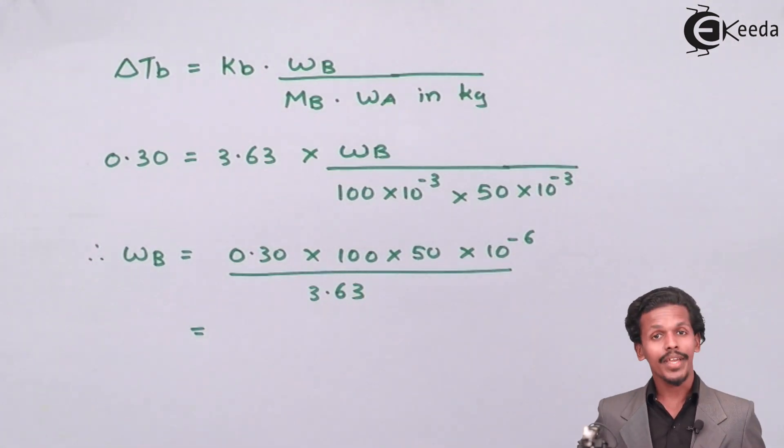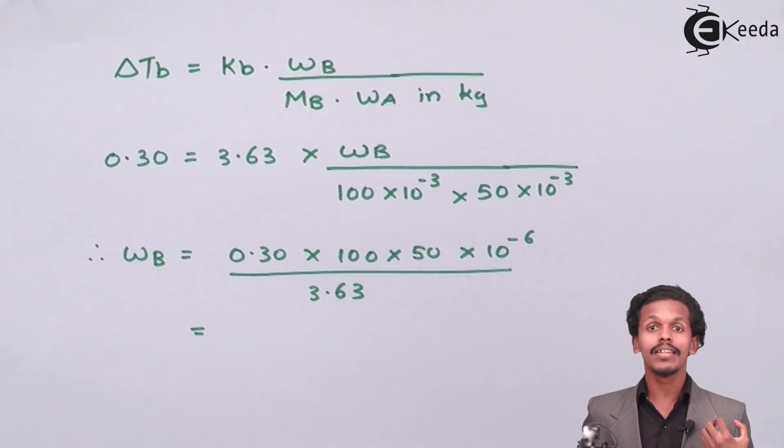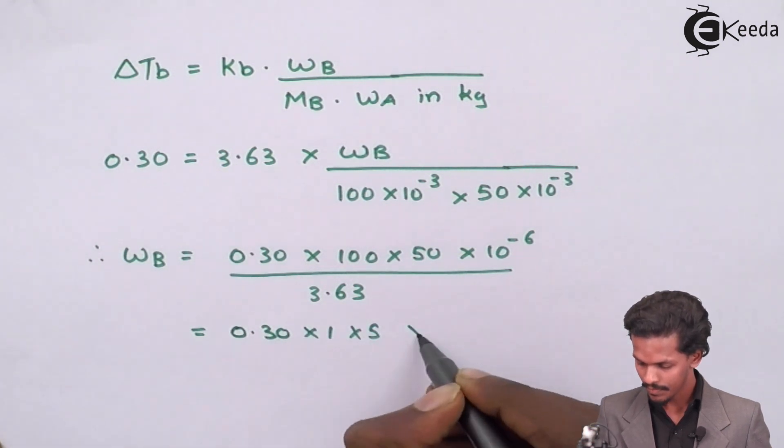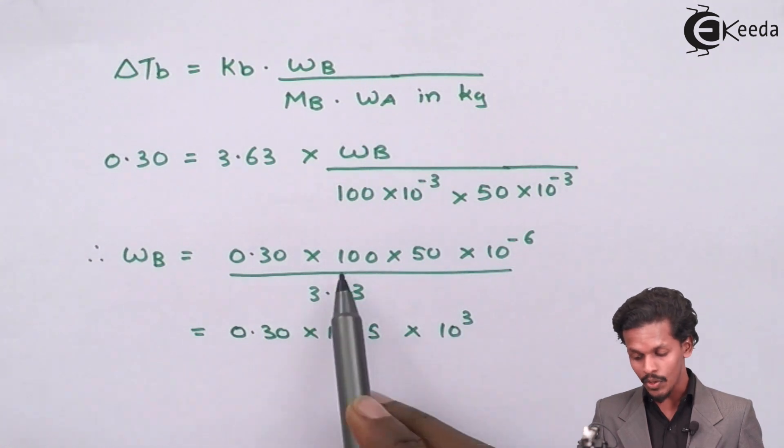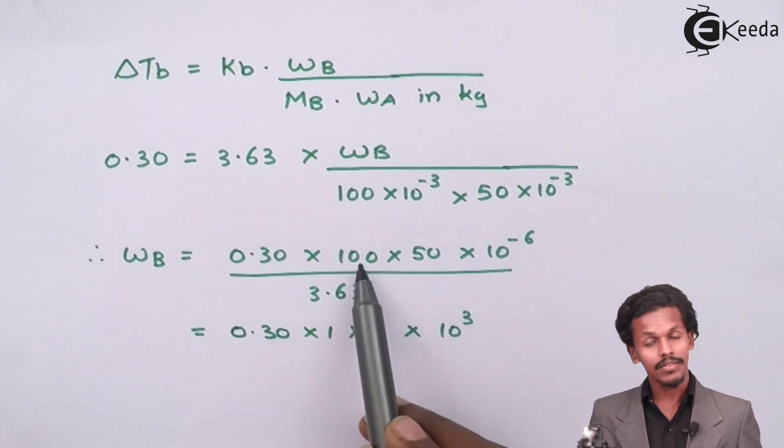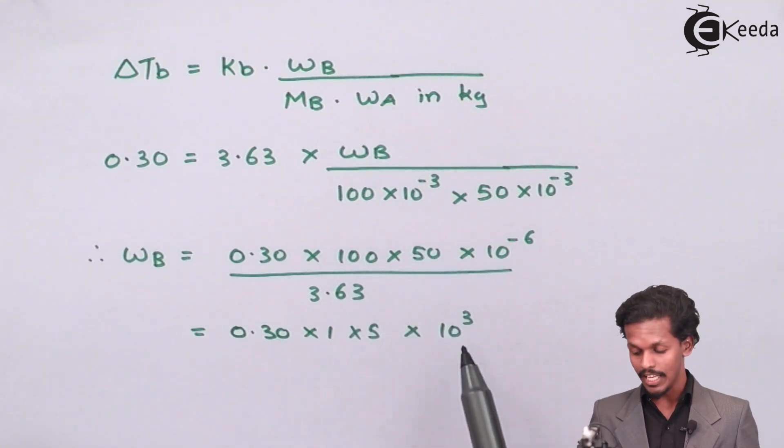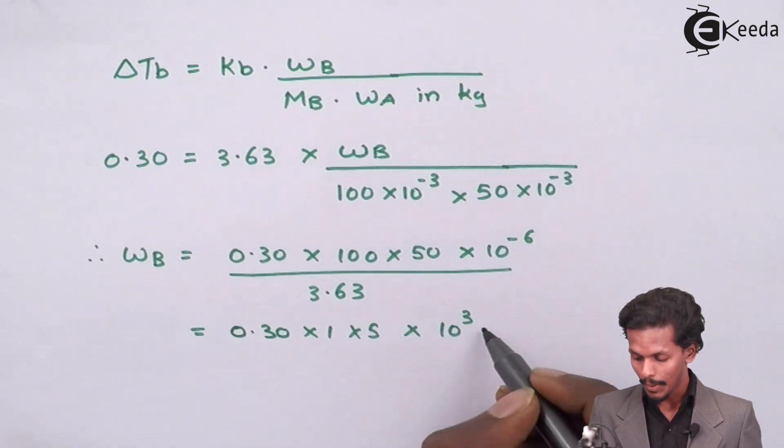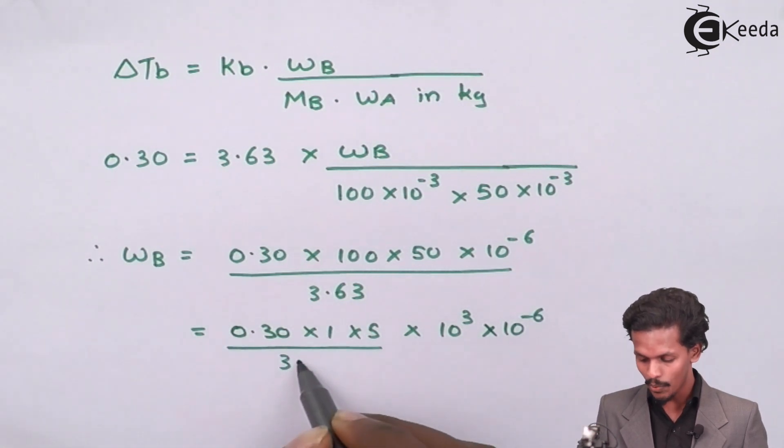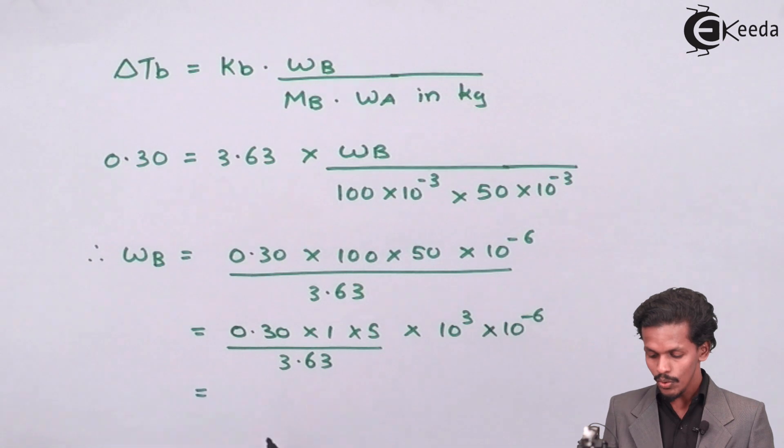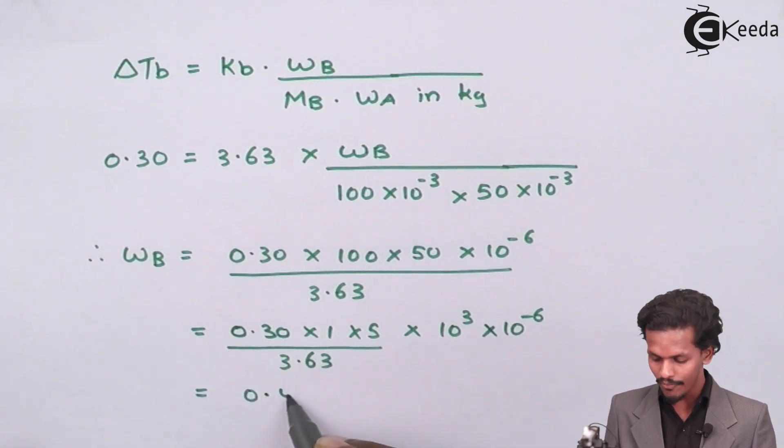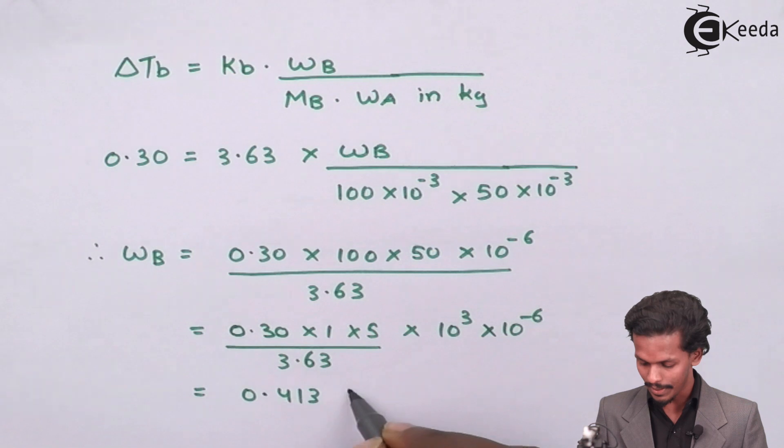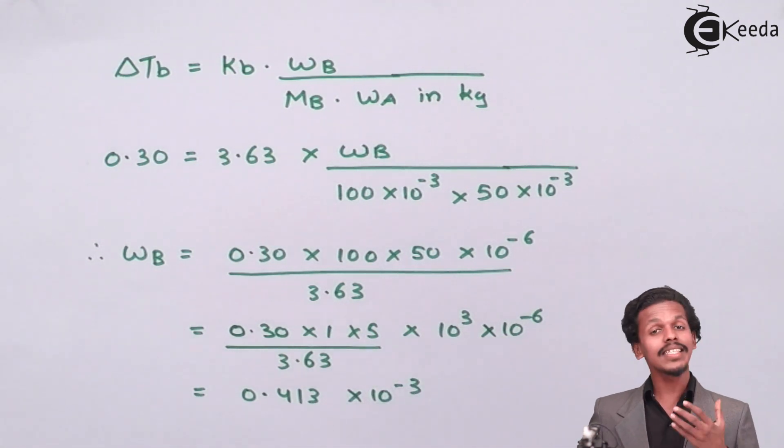Okay, so we can write this numerical in this format. This happened because 10 raised to 2 has been converted from hundred, and fifty has been converted into 10 raised to 1, which gives the value 10 raised to 3 multiplied by 10 raised to minus 6, and the whole divided by 3.63. So this equation will give you a value 0.413, and 10 raised to 3 multiplied by 10 raised to minus 6 is nothing but 10 raised to minus 3. So this is the answer.